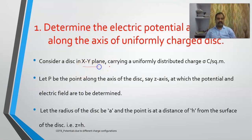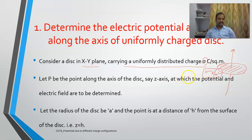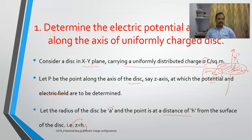Consider a disc in the x-y plane carrying a uniformly distributed charge of sigma coulombs per meter squared. Let P be a point along the axis of the disc on the z-axis, at which the potential and electric field are to be determined. Let the radius of the disc be a, and the point P is at a height h from the disc, so z equals h.